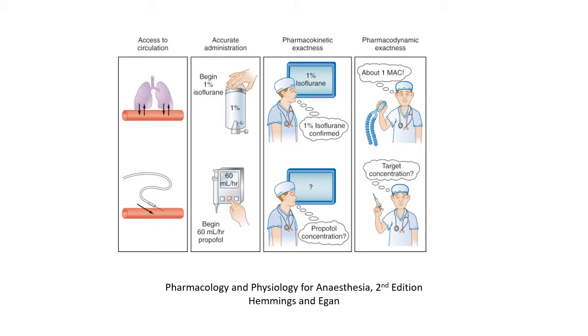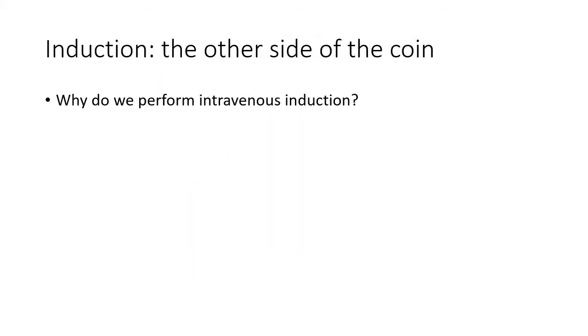Much is made of this comparison in the Hemmings and Egan chapter on intravenous pharmacokinetics, which I referred to in the very first lecture, the recommended reading lecture. So, if intravenous induction is such an uncertain event, then why do we almost always induce anaesthesia by the intravenous route when we have the choice?